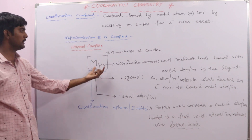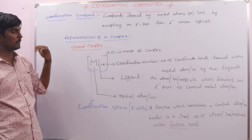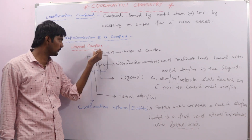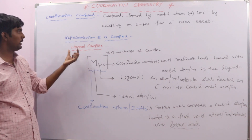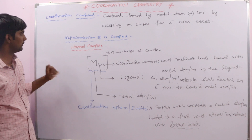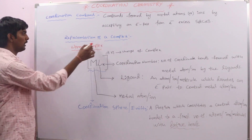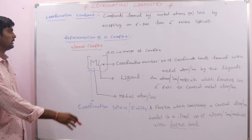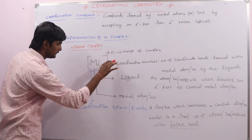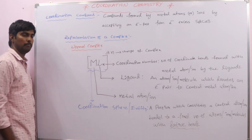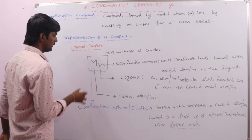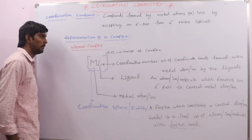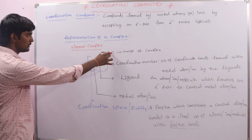Coordination complexes are classified into two types depending on the nature of the complex. One is a normal complex and another one is an ionic complex. Let us discuss how to represent a normal complex. In a normal complex, we write the metal inside a square bracket along with the ligand, coordination number, and charge of the complex.